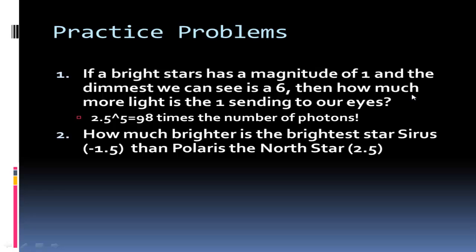Let's try this one: find the difference in apparent brightness for Sirius, the brightest star in the sky at negative 1.5, and Polaris, the north star at 2.5. We have a difference of four. A lot of students will say there's a difference of one - be careful, watch your negatives. 2.5 minus negative 1.5 gets you a difference of four, and therefore 2.5 to the fourth is 39 times brighter.